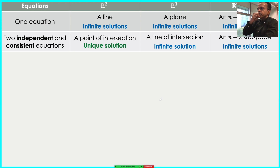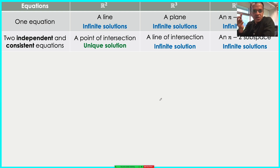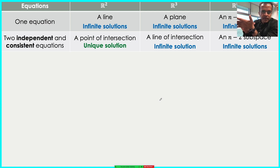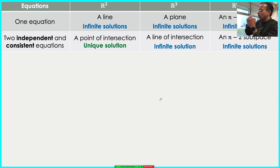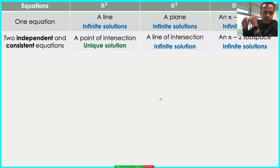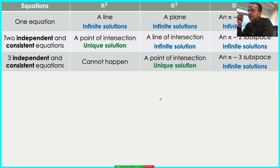With two independent and consistent equations in R2, both degrees of freedom are removed — leaving a zero-dimensional entity: a unique point. In R3, two independent consistent equations give two planes that intersect in a line, so there are infinitely many solutions. In Rn similarly, two equations give an (n−2)-dimensional intersection — again infinitely many solutions.